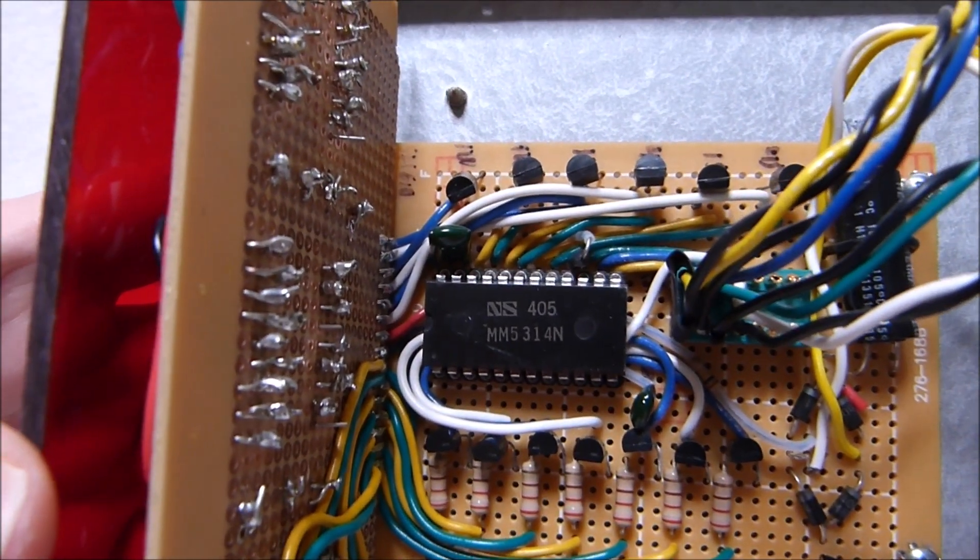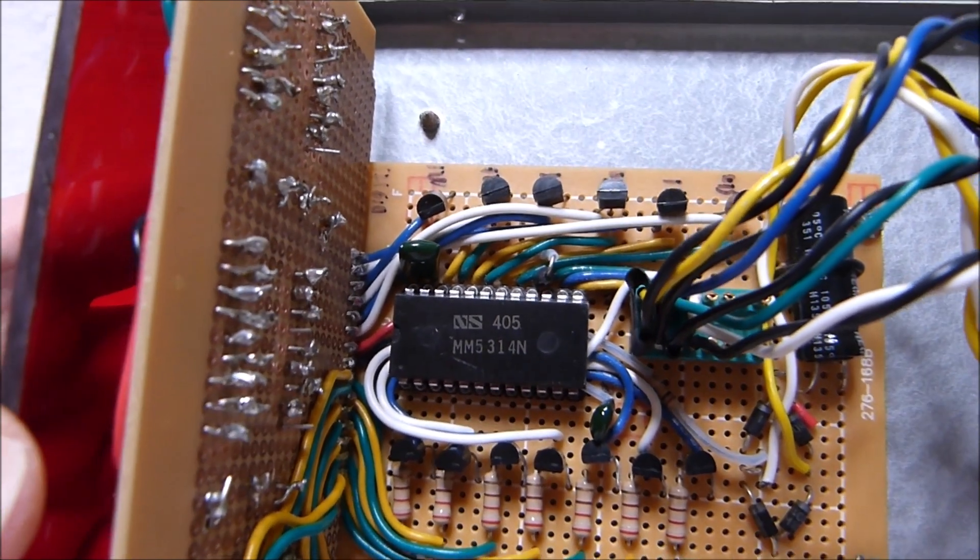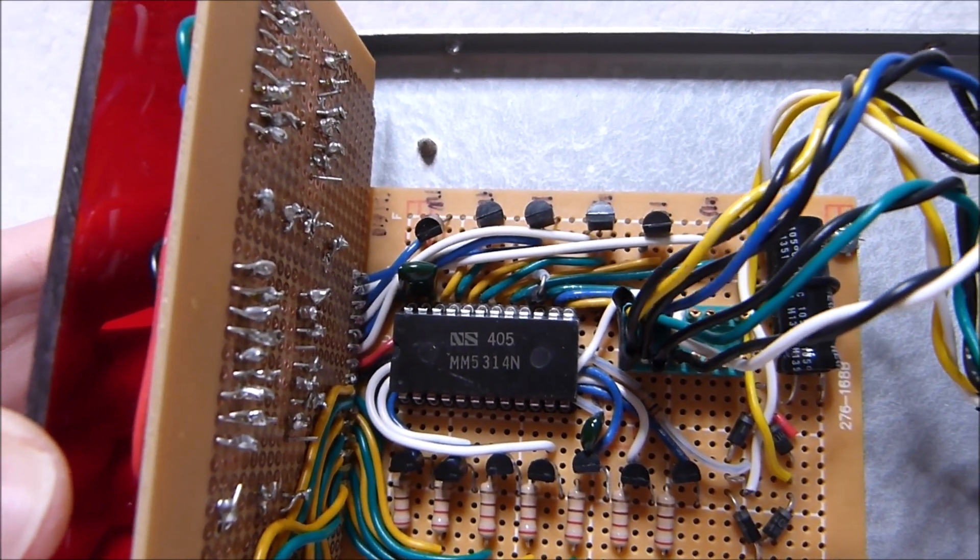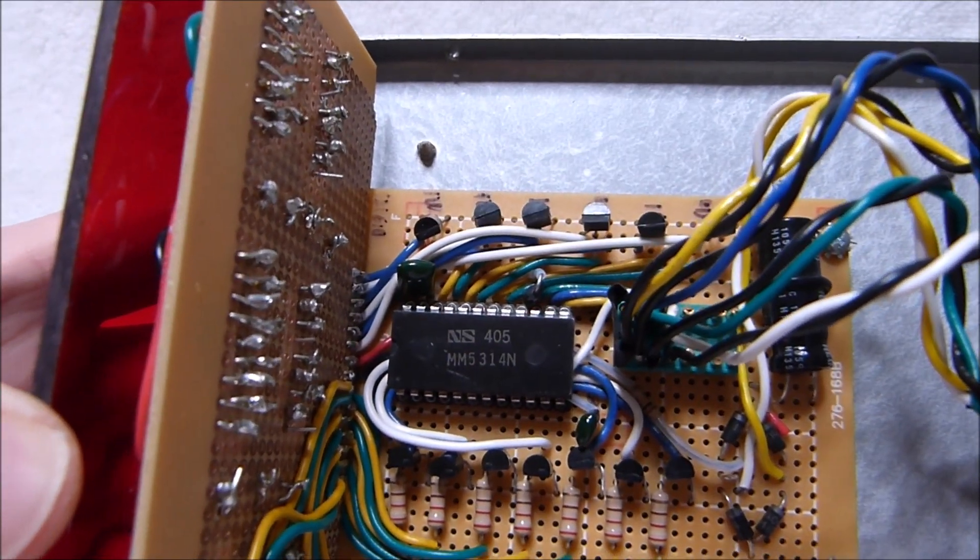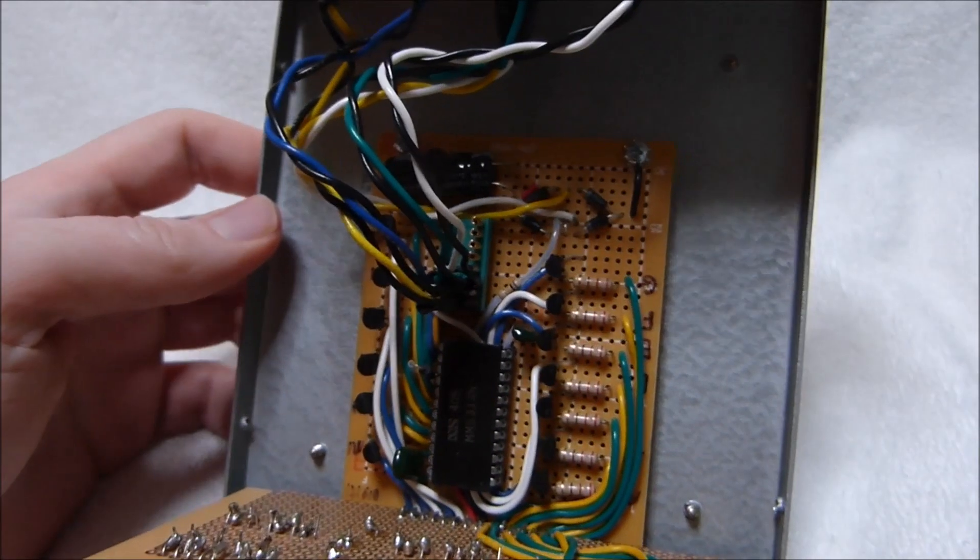As I mentioned before, this clock is based around the MM5314N clock chip. This one has a date code of 405, which is the fifth week of 1974, so it's a pretty early clock chip.